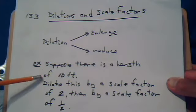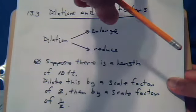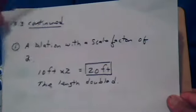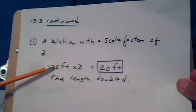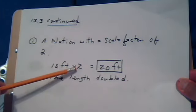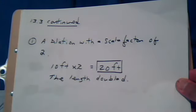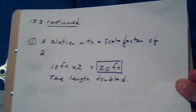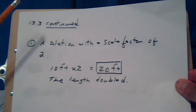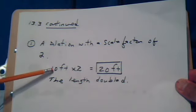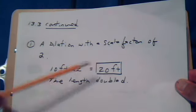Suppose there's a length of 10 feet. Dilate this by a scale factor of 2, then by a scale factor of one-half. A dilation with a scale factor of 2 means you take the original length and multiply times 2. Notice it has to be a multiplication. Scale factor, the word factor means multiplying. So in this case, the 10 feet went through a dilation with a scale factor of 2, so the size doubled.